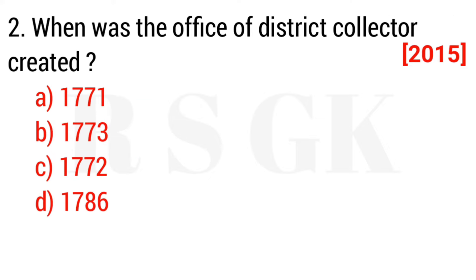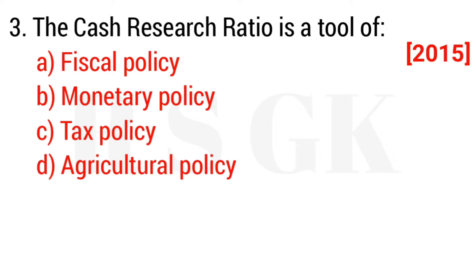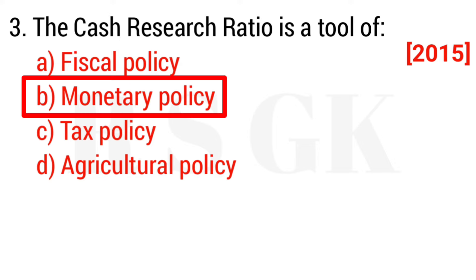Question 2: When was the office of District Collector created? The answer is option C, 1772. Question 3: The Cash Reserve Ratio is a tool of — the answer is option B, monetary policy.